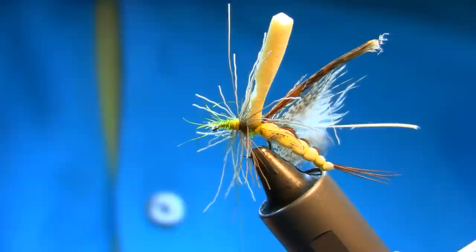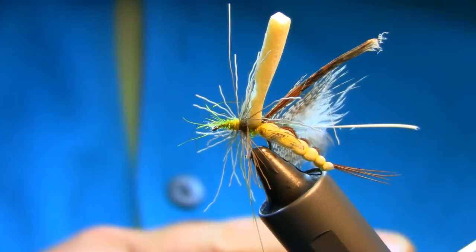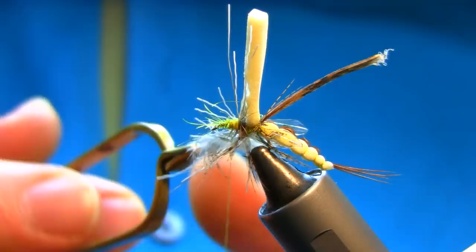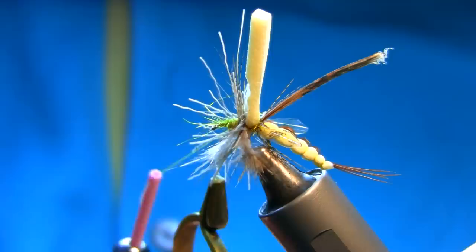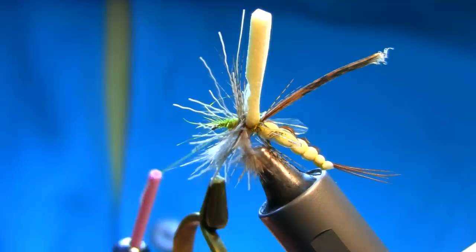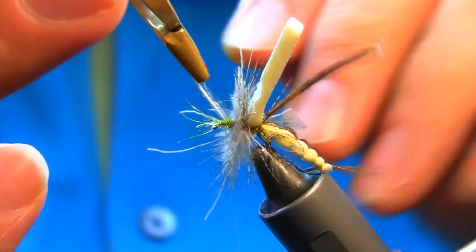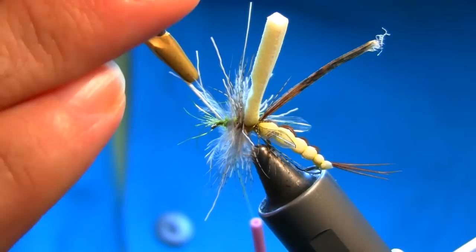Now you need a hackle plier for this. The partridge hackle is very fragile, so just do it gently—a couple turns in between the deer hair. One more turn, and that's enough. Let's catch it securely. A couple turns, and that's fine.